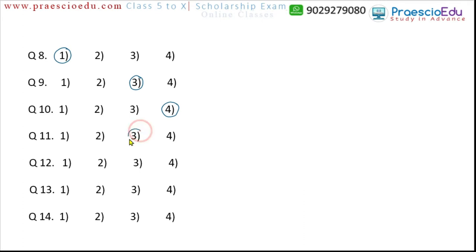Question 12: potato, radish, carrot, and sweet potato. Radish, carrot, and sweet potato are all in the root category, but potato is in the stem category. So potato is the different one. Question 13: 2016, 2010, 2004, and 1992. The year 2010 is not a leap year — if you divide by four you can verify this. So option two, 2010, is the different one.